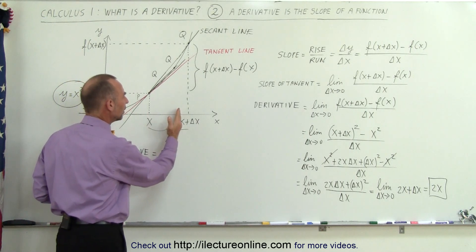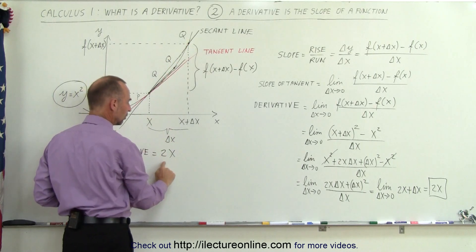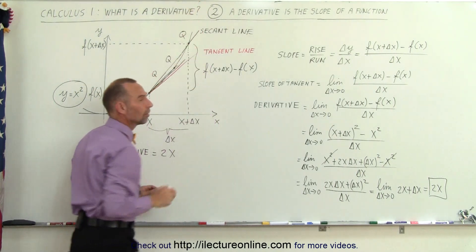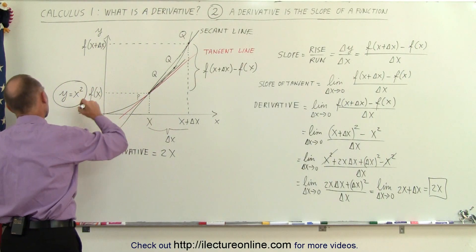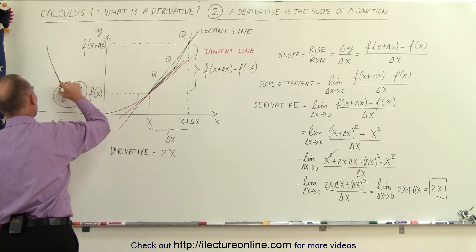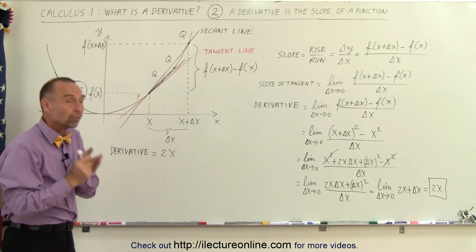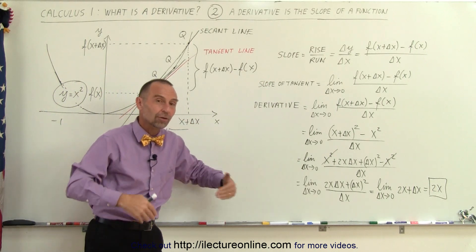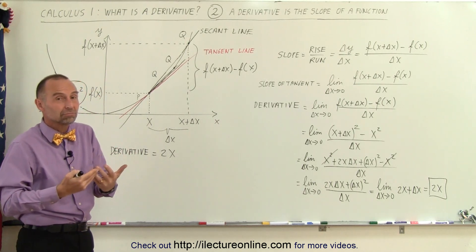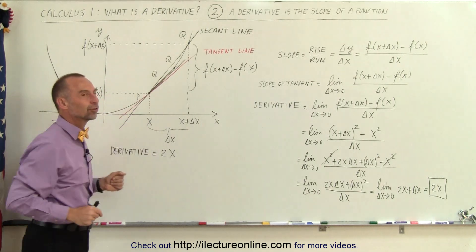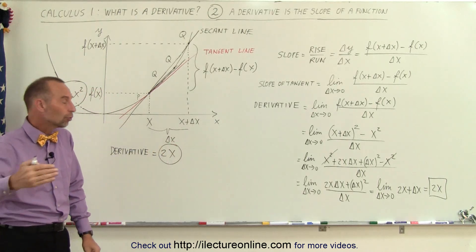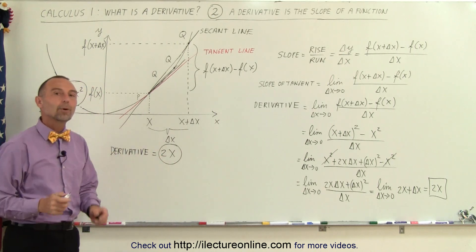The derivative equals 2x — it's a function in itself that depends on x. As I pick different values for x, I get different slopes. When x equals 1, the slope is 2; when x equals 2, the slope is 4; when x equals 3, the slope is 6. When x equals negative 1, the slope is negative 2. So the derivative, found using the definition of a limit, tells me the slope anywhere along the function — just plug in a value for x.